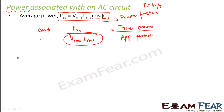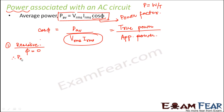Now let's see how we calculate power in different types of circuits. In a resistive circuit, the voltage and current are in the same phase, which means φ is equal to 0. Therefore, P_average is equal to V_rms × I_rms, because cos 0 is 1.